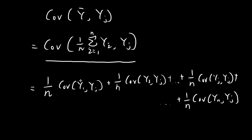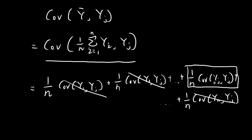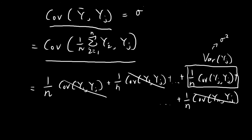By the initial assumptions of the simple linear regression model, all the y terms are uncorrelated with one another. So Cov(y₁, yⱼ) = 0, and all cross terms are equal to 0. The only nonzero term is Cov(yⱼ, yⱼ), which is just the variance of yⱼ, equal to σ². So Cov(ȳ, yⱼ) = (1/n) · σ² = σ²/n. Don't forget there's also an n in the denominator. The same argument applies to each and every one of these covariance terms — they all equal σ²/n.